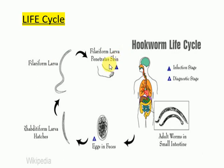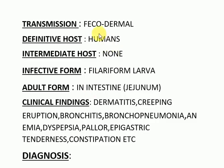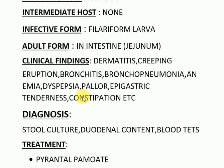This was the life cycle of hookworm or Ancylostoma duodenale. Transmission is feco-dermal — that is, exit via feces and entry through the dermal route (skin). The definitive host is humans; there is no intermediate host. The infective form is the filariform larva; the adult form resides in the intestine. Clinical findings include dermatitis, creeping eruption, bronchitis, bronchopneumonia, edema, dyspepsia, epigastric tenderness, and constipation.